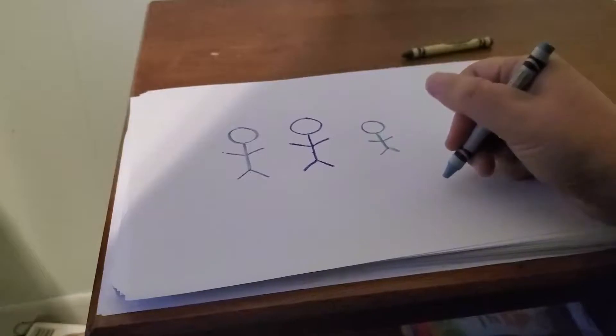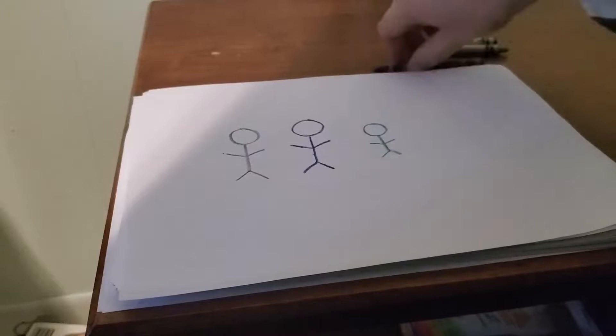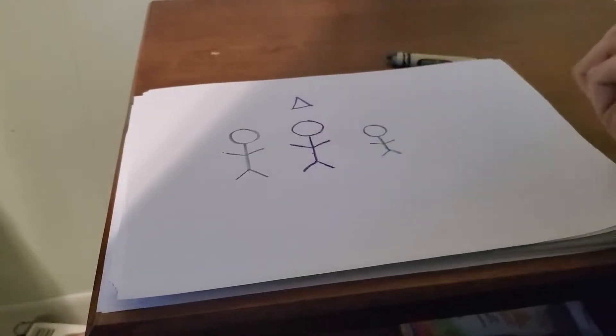Sometimes I like to just draw shapes too. I really, really like the shape of a triangle, so I'm going to draw that above my person too.